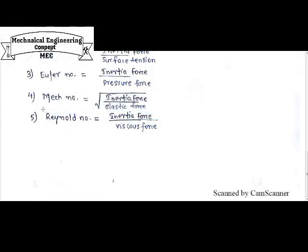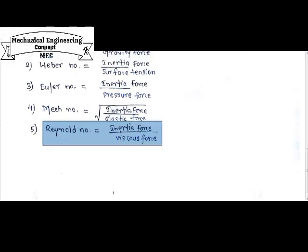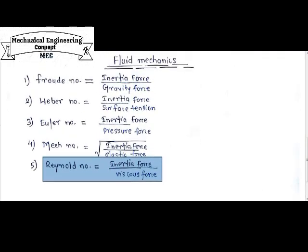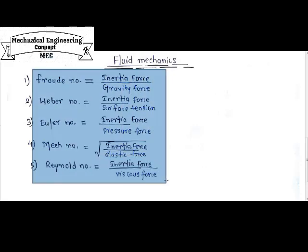The last one is the Reynolds number. Reynolds number is the ratio of inertia force to viscous force. The viscosity of a liquid is related to the Reynolds number. So this is the basic relation between all five numbers with respect to inertia force, viscous force, elastic force, pressure force, surface tension, and gravity force.